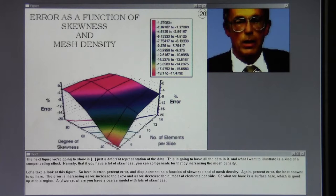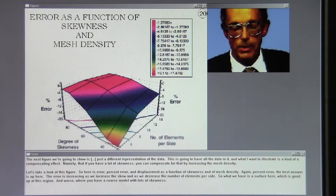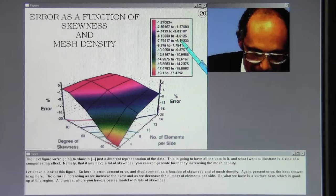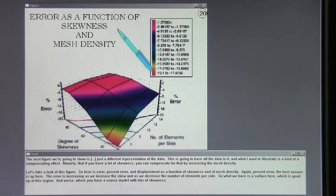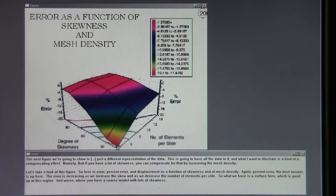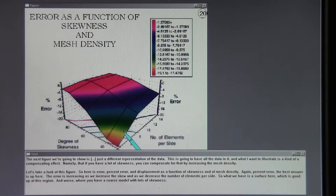The next figure we're going to show is just a different representation of the data. This is going to have all of the data in it. And what I want to illustrate is a kind of a compensating effect. Namely that if you have a lot of skewness, you can compensate for that by increasing the mesh density. Let's take a look at this figure. So here is error, percent error and displacement as a function of skewness and of mesh density. Again percent error, the best answer is up here. The error is increasing as we increase the skew and as we decrease the number of elements per side. So what we have is a surface here which is good up at this region and worse where you have a coarse model with lots of skewness.